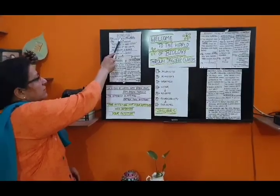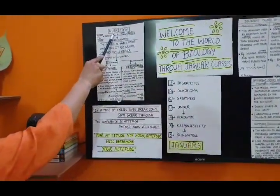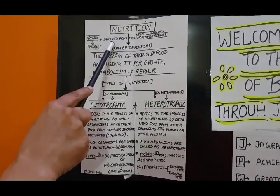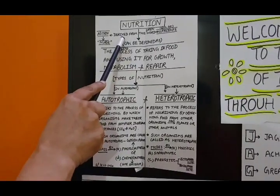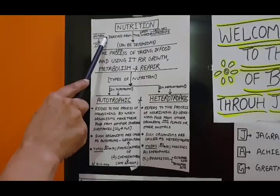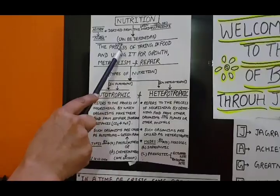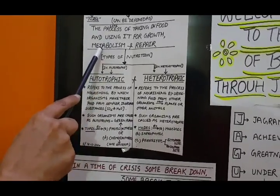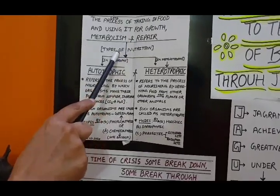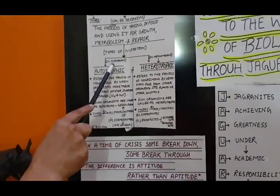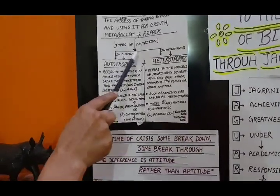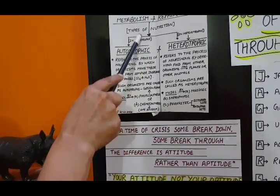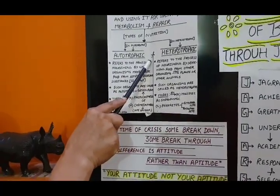In this chapter, we will first take the life process of Nutrition. The word nutrition is derived from nutrients, which comes from the Latin word 'Nutrex,' meaning nurse. This process can be defined as the process of taking in food and using it for growth, metabolism, and repair. There are different types of nutrition, and we are categorizing the nutrition process into two main types. In class 9th, you have also studied about autotrophs and heterotrophs, and the classification of living organisms is based on that.